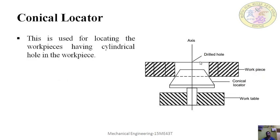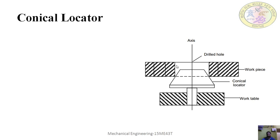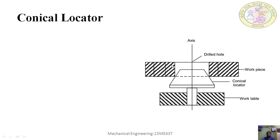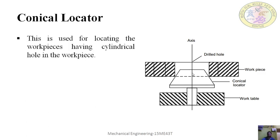This is a conical locator, which is similar to the cylindrical locator. The only difference is that instead of a cylindrical locator, we use a conical locator. This is useful for accommodating a larger diameter range. In the case of a cylindrical locator, it is limited to a particular hole size. But if the size of the hole is different, then we can use a conical locator — it will adjust to the diameter of the workpiece hole.